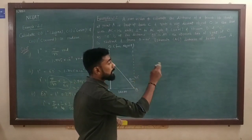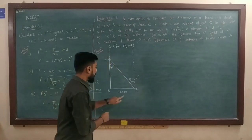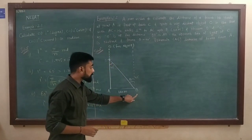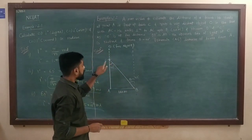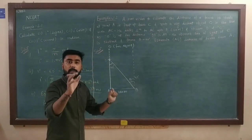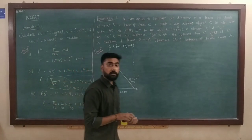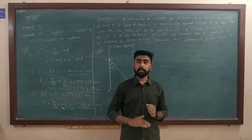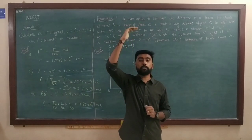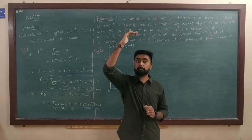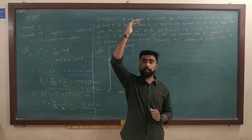He observes O and C again from point B. Here is point B, and from B he observes point C and the far object O. For example, we are standing here; here is the tower at point C.